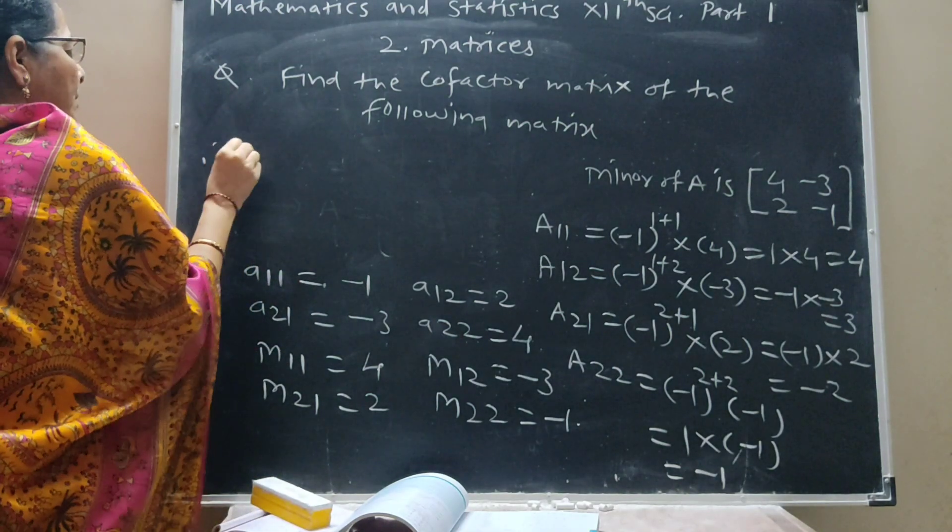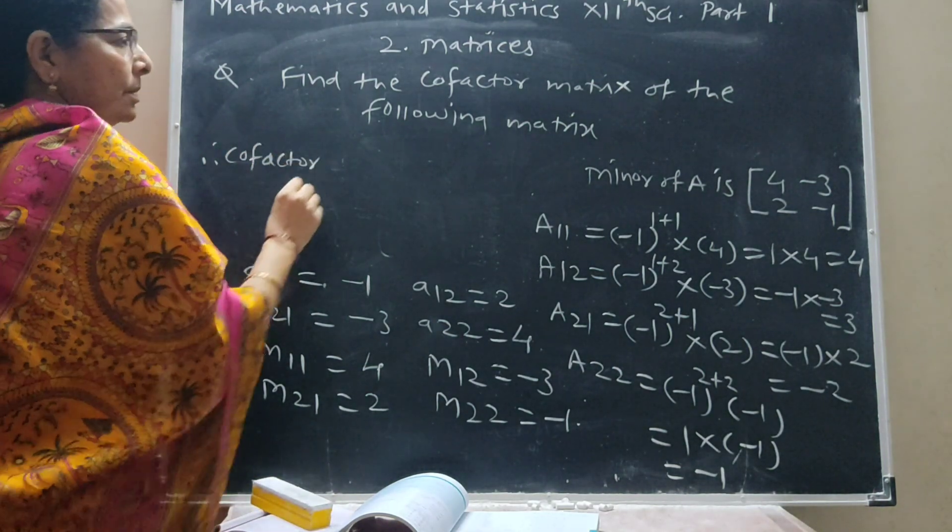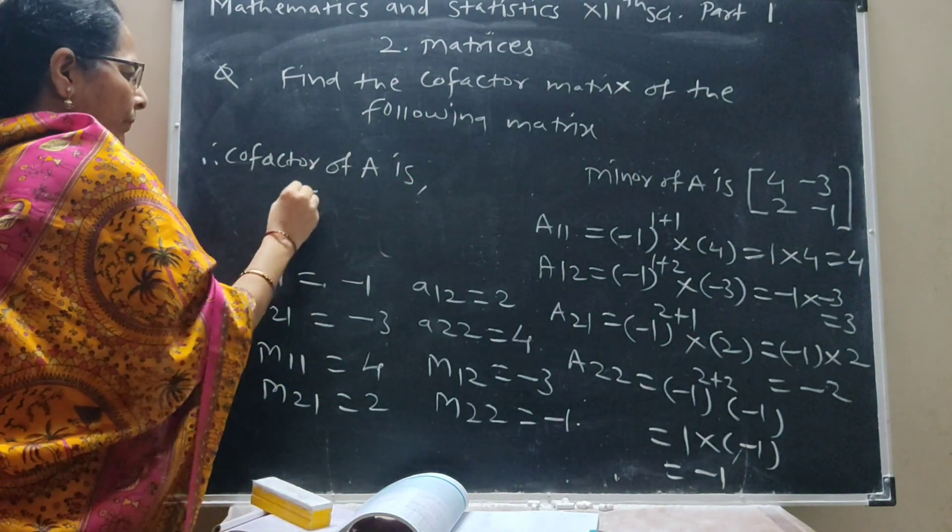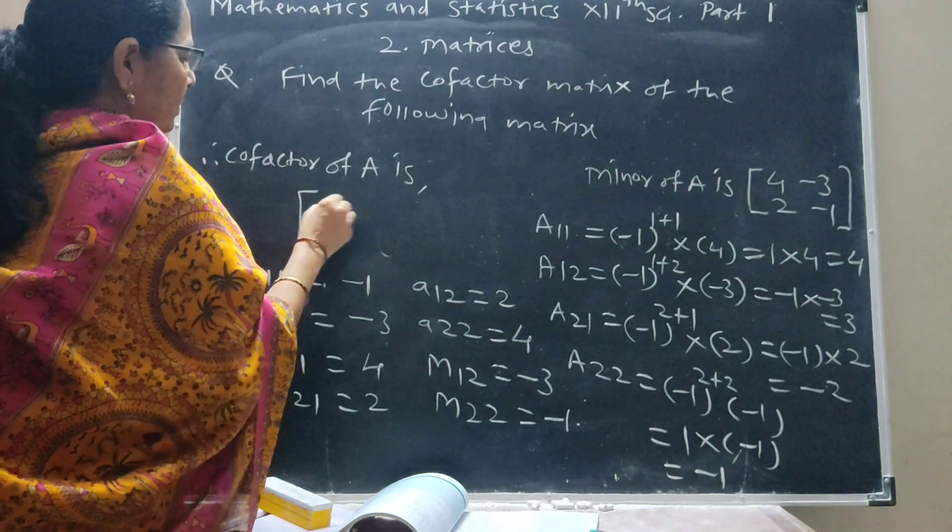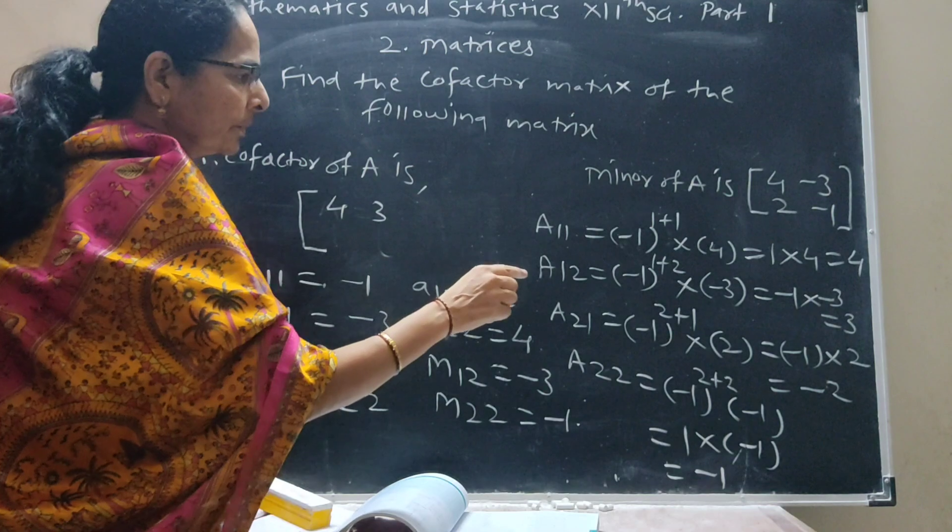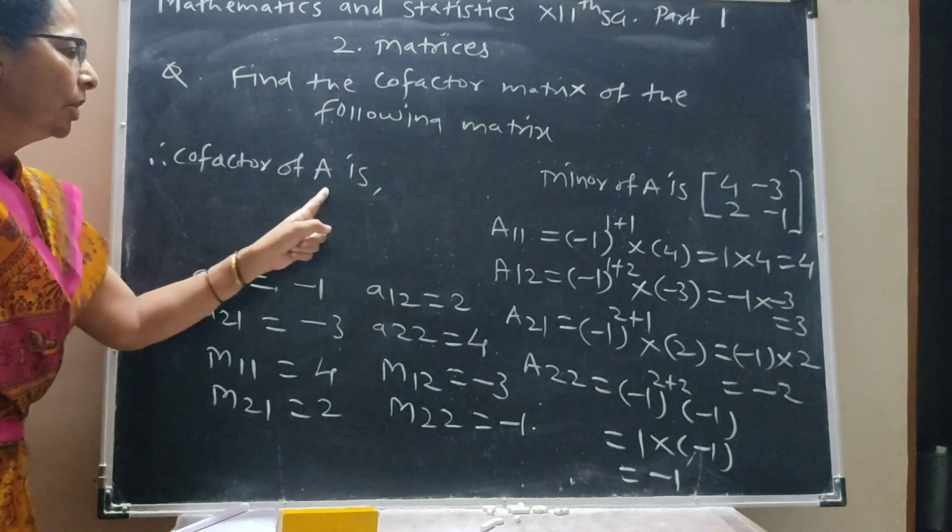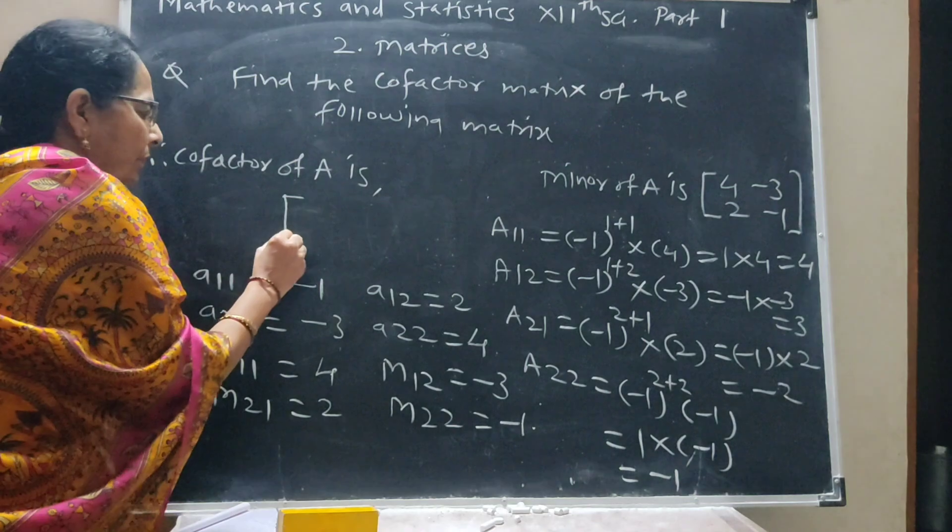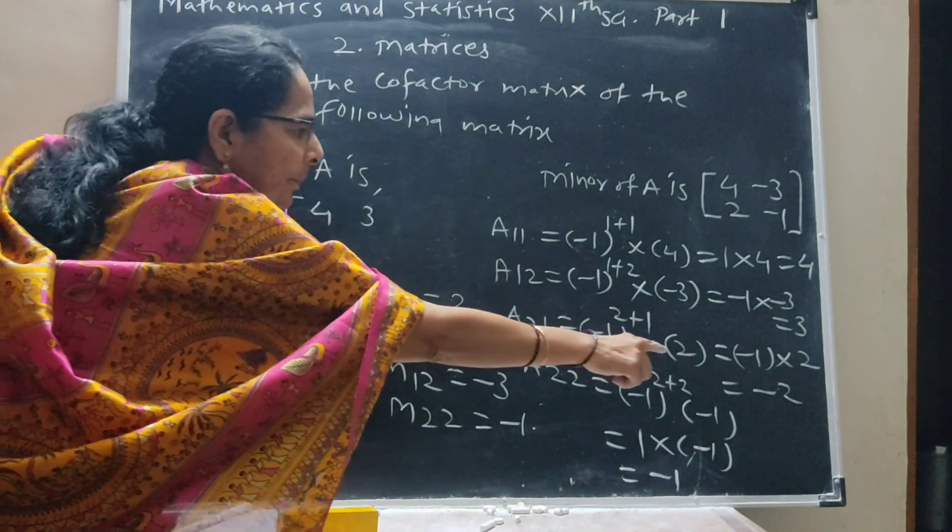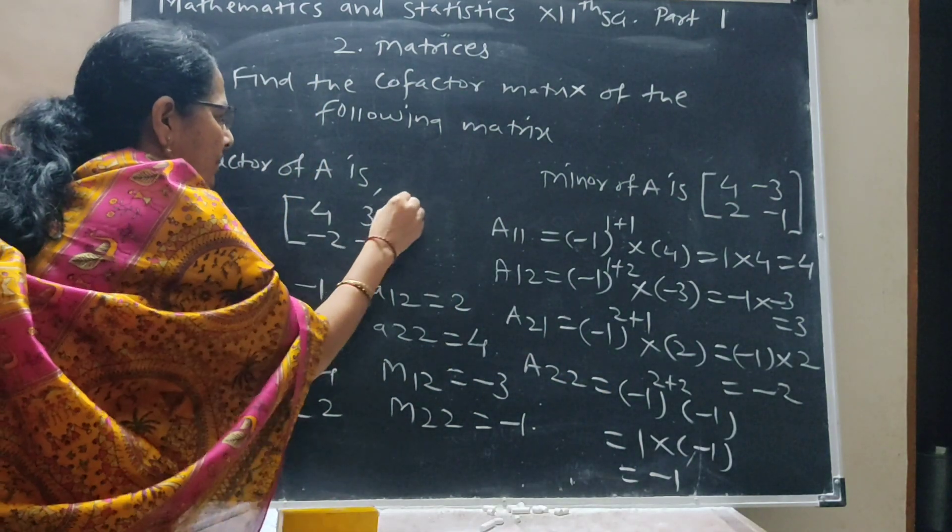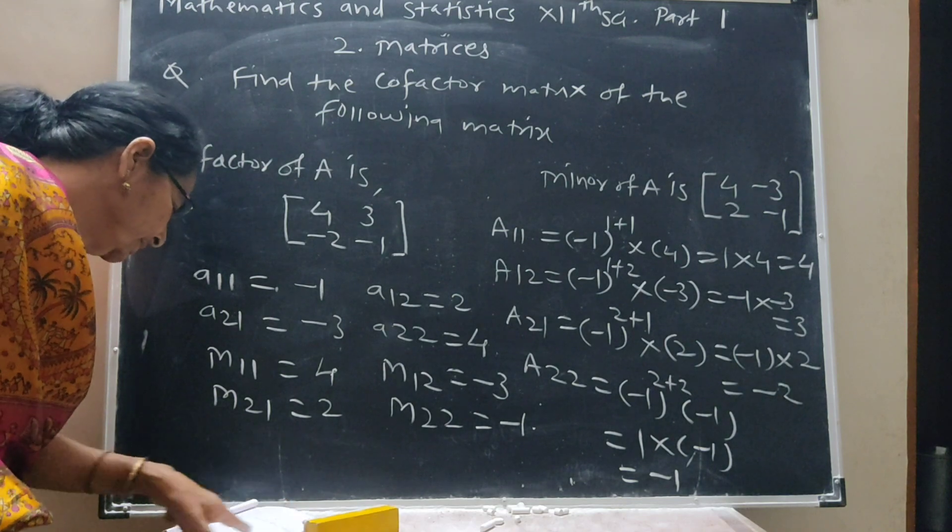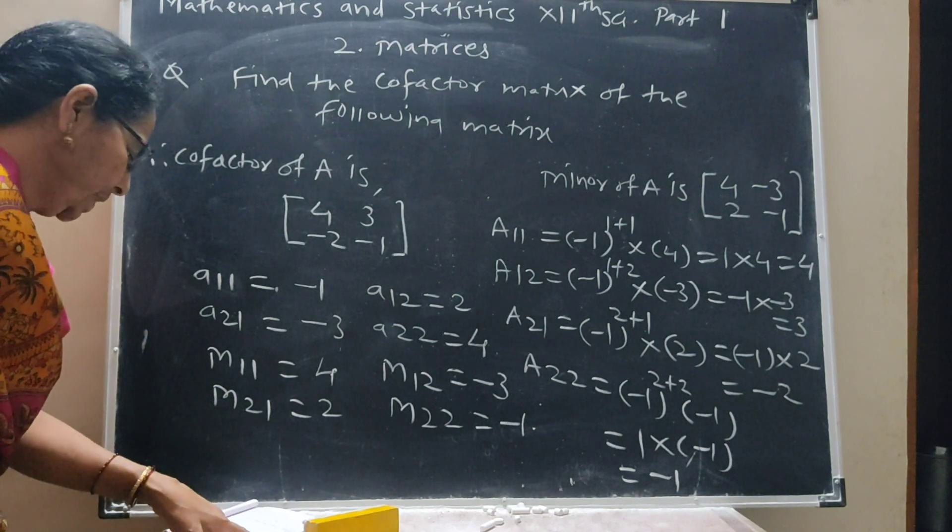Therefore, the cofactor of A is the matrix 4, 2 in the first row, and minus 2, minus 1 in the second row.